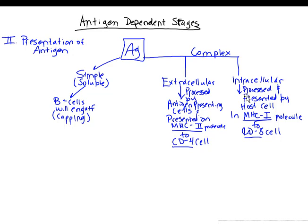An intracellular antigen — typically a virus, but possibly an intracellular bacterium or protozoan — must be processed and presented from inside the cell. During synthesis, viral antigen fragments get incorporated into an MHC class I molecule and presented on the cell surface, like sending up smoke signals or someone at a bank window calling for help. This signals that the cell is infected.